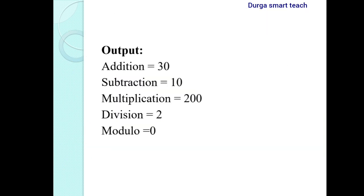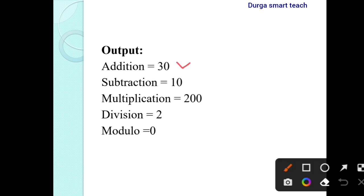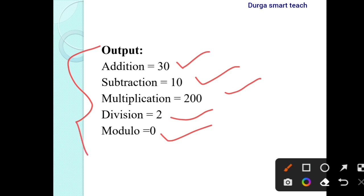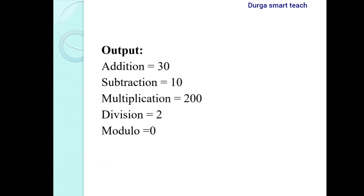The output is: addition is 30, subtraction is 10, multiplication is 200, division is 2, and modulo division is 0. This is the output for that program.